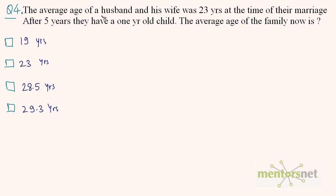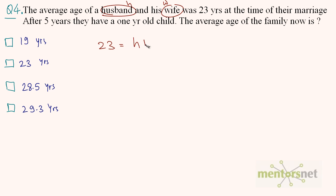Question 4: The average age of a husband and his wife was 23 years at the time of their marriage. After 5 years, they have a 1 year old child. What is the average age of the family now? Let the ages of the husband and wife at the time of their marriage be H and W respectively. The average age is 23, so 23 equals H plus W divided by 2.